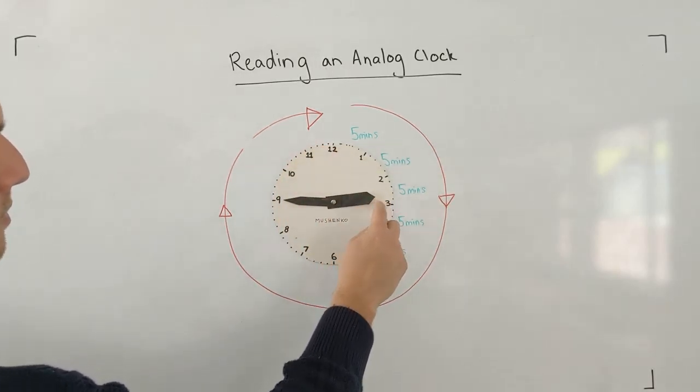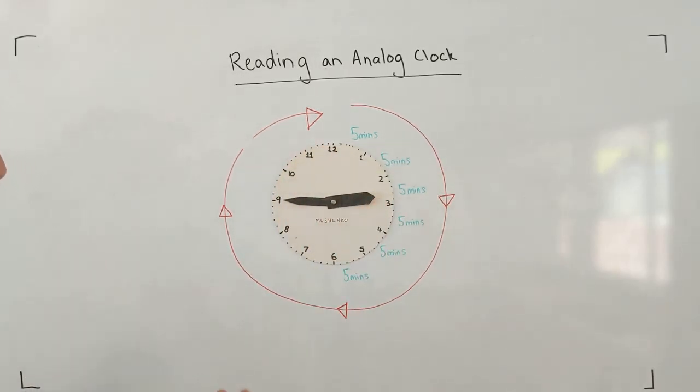It's almost there. This is almost there. It's almost three o'clock. I could call that quarter to 3 or I could call it 2:45. Both different ways to say the same time.